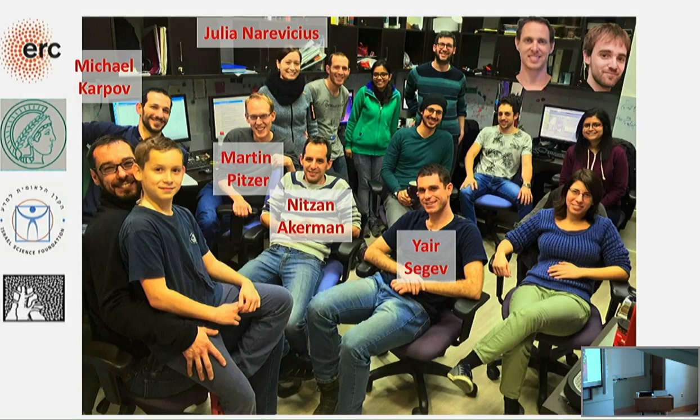So again, thank you very much. People who give us money, always we are thankful. Yair led this experiment. Julia, she's our electrical engineer. Michael Karpov, also a PhD student, worked a lot on the second generation decelerator. Martin, he's really a good postdoc. And Nitzan Akerman was a postdoc before Martin. He was responsible for building this second decelerator in our lab. A really gifted guy. Thank you very much.